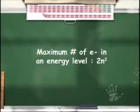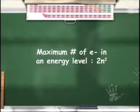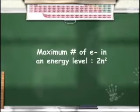The maximum number of electrons that could be in a particular energy level is calculated using the formula 2N². Make sure to write this formula down—you'll need it when you do your practice problems later.